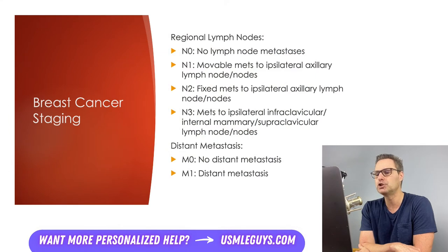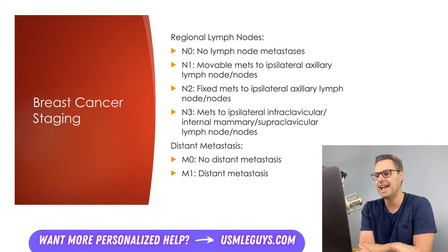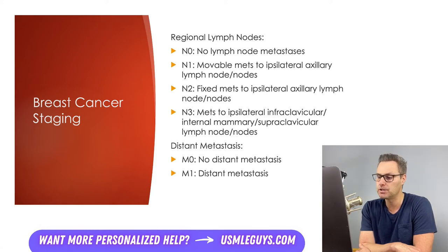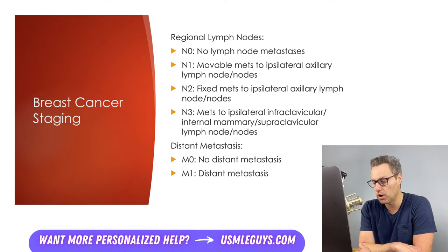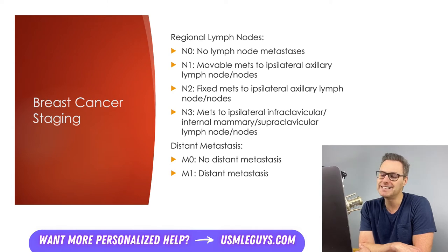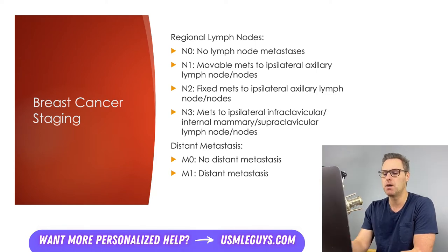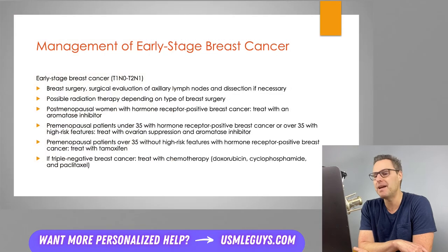Moving on to regional lymph node and distant metastasis staging: N0 means no lymph node metastases found. N1 means movable metastases to the ipsilateral axillary lymph node or nodes. N2 means fixed metastases to the ipsilateral axillary nodes. N3 means metastases to the ipsilateral infraclavicular, internal mammary, or supraclavicular lymph nodes. For distant metastasis, M0 means no distant metastases found, and M1 means distant metastases are found. Treatment of non-metastatic breast cancer depends on staging and breast cancer gene expression of ER, PR, and/or HER2.